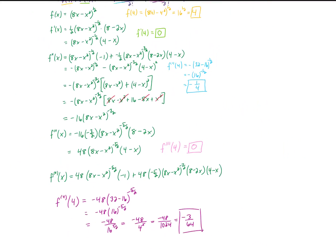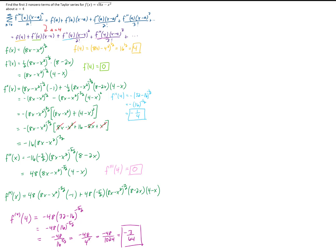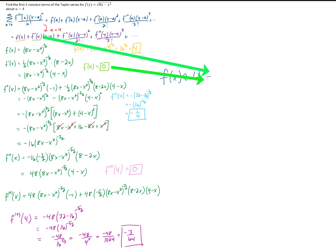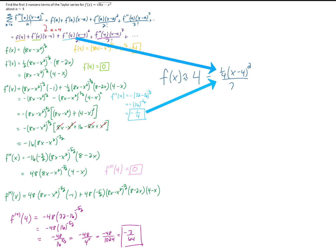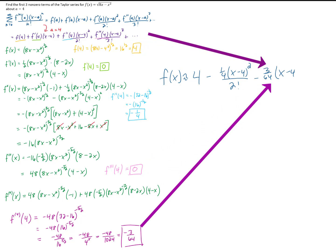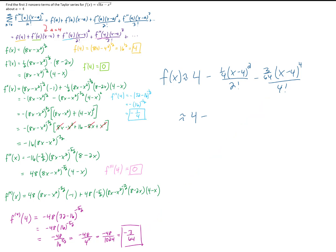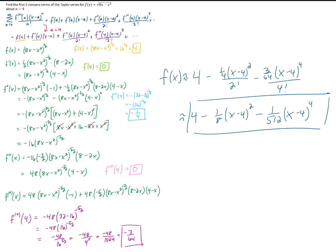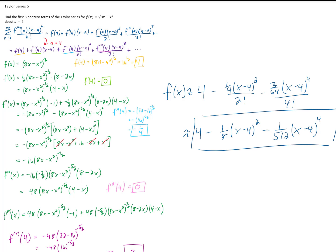That is our third non-zero coefficient. Looking at all the work, our final answer is: the original function is approximately 4, minus (1/4)(x minus 4)² over 2 factorial, minus (3/64)(x minus 4)⁴ over 4 factorial. Simplifying: 1/4 divided by 2 factorial is 1/8, and 3/64 divided by 4 factorial is 1/512. So those are the first three non-zero terms of the Taylor series centered at a equals 4. It's been lovely, but let's try for an easier one next time!